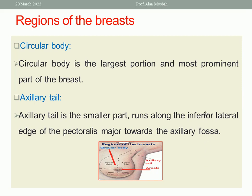What are the regions of the breast? There is the circular body — this is the most prominent and largest portion of the breast. There is also the axillary tail, or tail of Spence, which is the smaller part. We also have the nipple at the center, at the mid-clavicular line, corresponding to the fourth rib in early life.